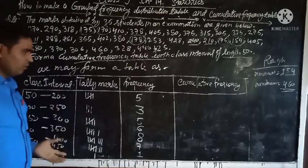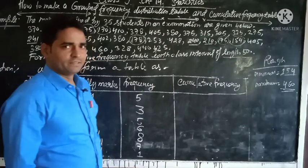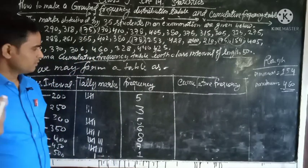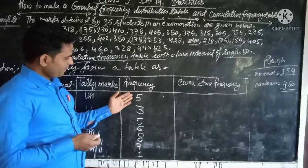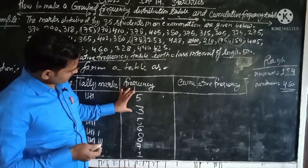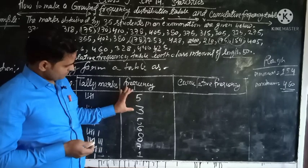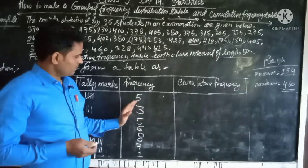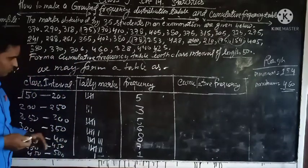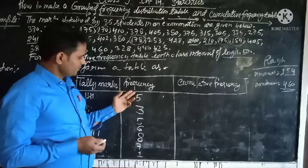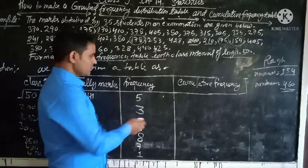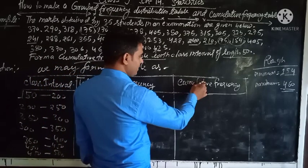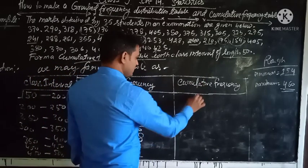And now we make the cumulative frequency. So steps to find the cumulative frequency: we add the frequency while we move from the top to below. We add the successive frequency.